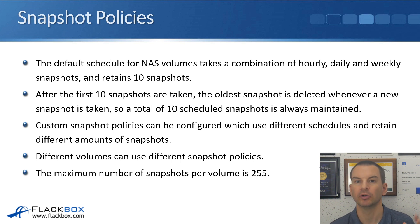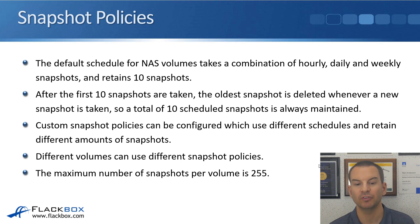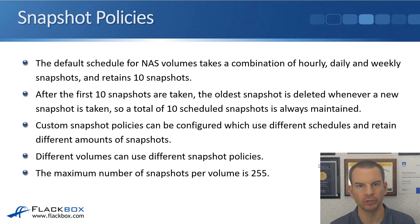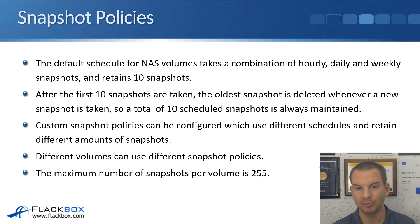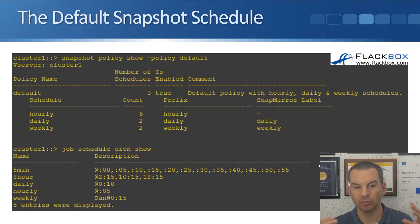Custom snapshot policies can be configured which use different schedules and retain different amounts of snapshots. Different volumes can use different snapshot policies, and the reason why you would want to use different policies for different volumes will be covered in the next lecture. The maximum number of snapshots that you can have per volume is 255.